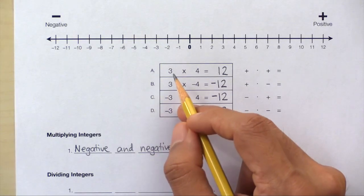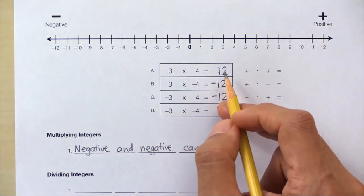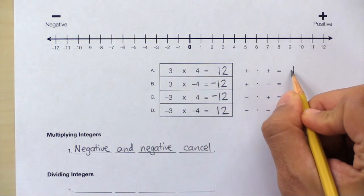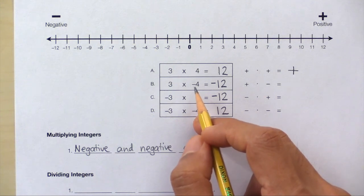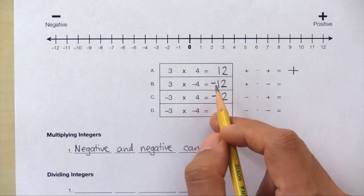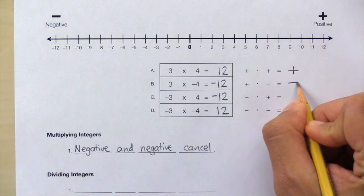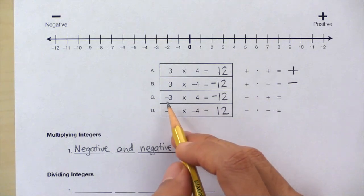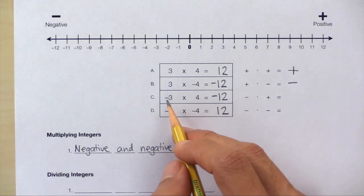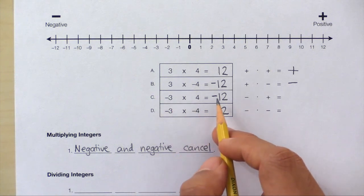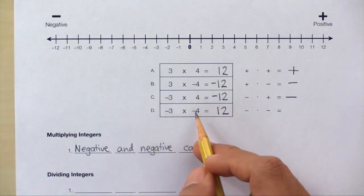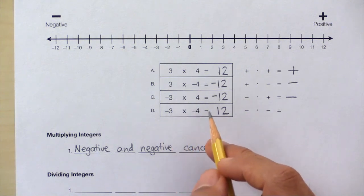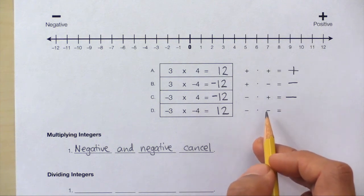Take a look at the chart. In box A, we had a positive times a positive, so our answer was positive — positive times positive equals positive. Box B: positive times a negative, and since we don't have another negative to cancel this one out, your answer is going to be negative — positive times negative equals negative. Negative times positive equals negative. Last one, box D: negative times a negative — negative and negative cancel to give you a positive, so negative times negative equals positive.